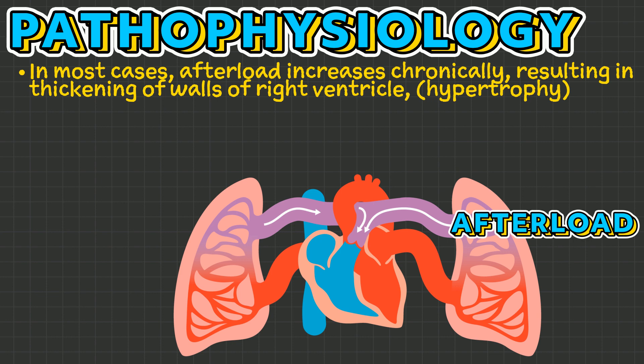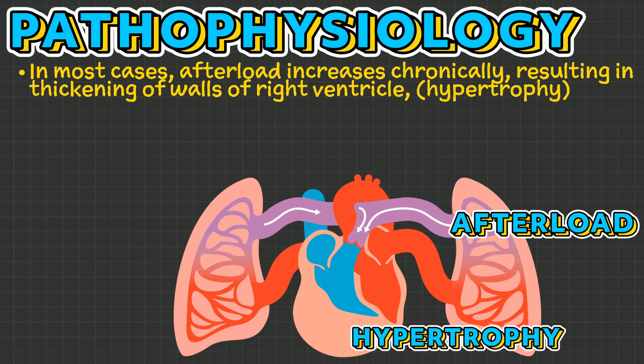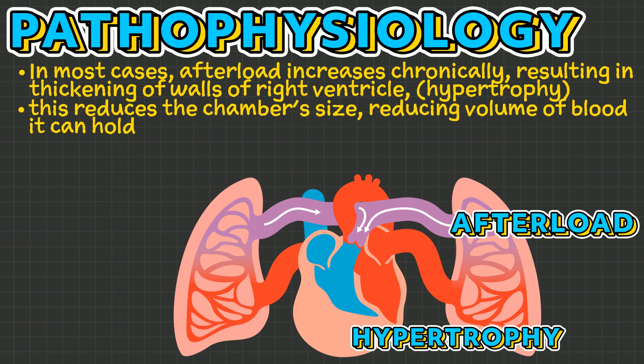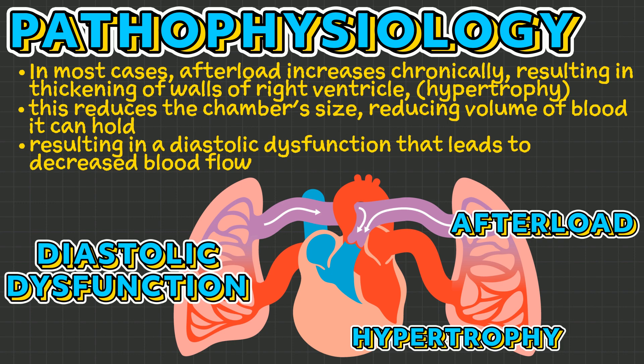In most cases, afterload increases chronically, resulting in the thickening of the walls of the right ventricle, known as hypertrophy. However, this thickening reduces the chamber's size, reducing the volume of blood it can hold, resulting in a diastolic dysfunction that leads to decreased blood flow.